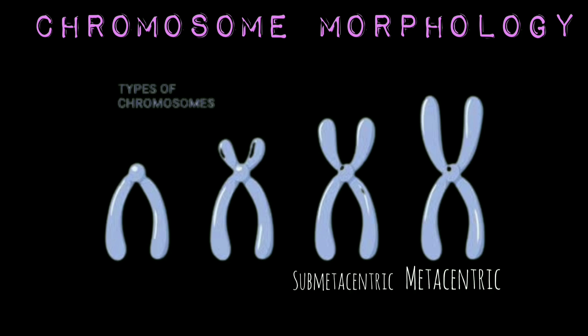In submetacentric chromosomes, the centromere is located on one side of the central point — that is, the centromere is submedian. Such chromosomes appear either similar to a capital V or small J during anaphase. In acrocentric chromosomes, the centromere is located close to one end of the chromosome — that is, it is subterminal. Acrocentric chromosomes may appear either small J or rod-shaped during anaphase.